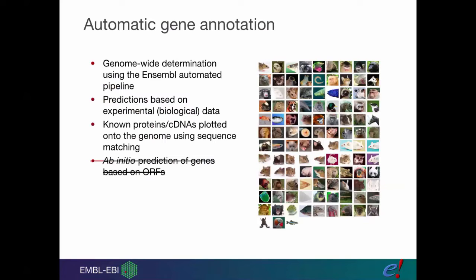This allows us to identify everywhere where there are genes on the genome. One of the things that people always think when they hear the phrase automatic gene annotation is that we're just finding open reading frames in the genome. This is what's called ab initio prediction. We do not do this as part of our gene annotation. We would never predict a gene just on the basis of an open reading frame. We have to have real biological data for it.